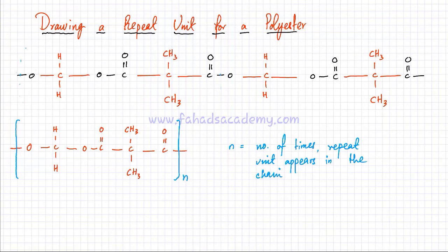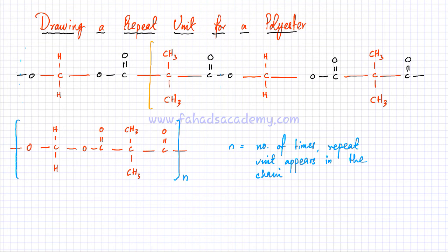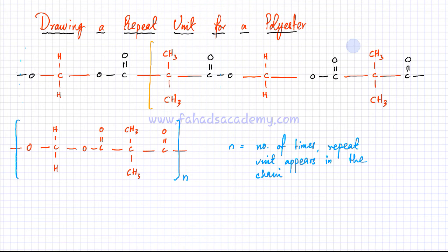There could be many different repeat units for the same polyester chain — I can pick another repeat unit with a different starting point. So let's say I mark my starting point here and look for the part of the chain that repeats. This entire part is different, but as I reach this part with CH3, the chain starts repeating again. So this is where my repeat unit ends.